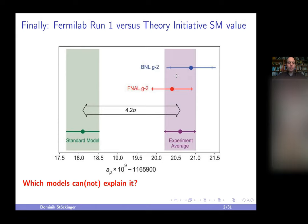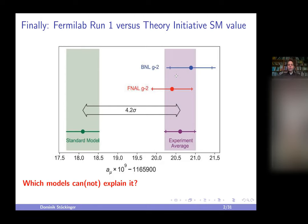There is also a Standard Model calculation based on the BMW lattice result, which I won't focus on in these lectures. This plot is a current snapshot of the theory initiative Standard Model prediction versus the Fermilab Run 1 data. There will be further runs and the Standard Model prediction will also improve, but for now we want to interpret this 4.2 sigma deviation.